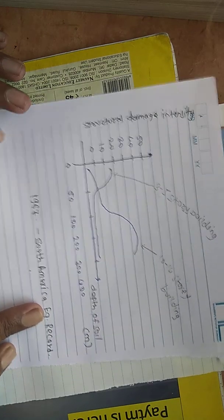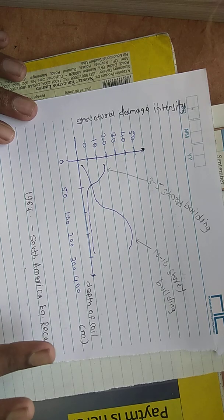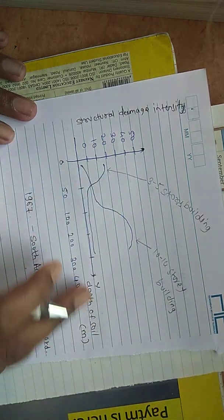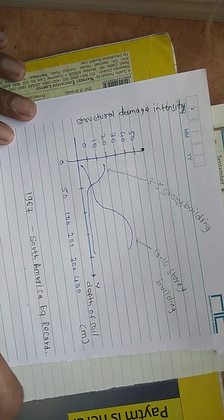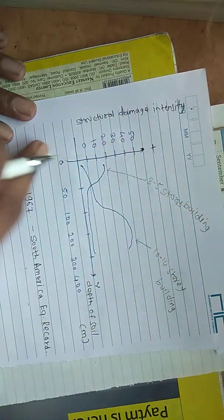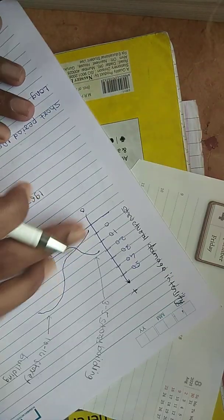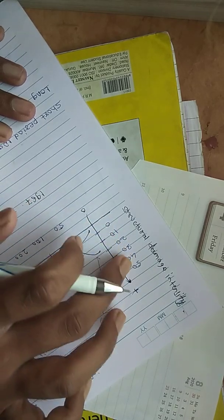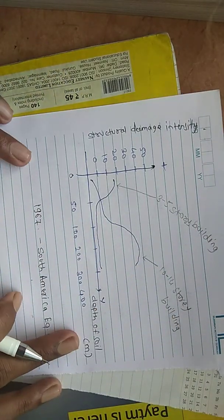On the y-axis there is depth of soil—soil below the building, depth of soil is given in meters—and on the x-axis they have given structural damage intensity. This means damage intensity, and this is the depth of soil.